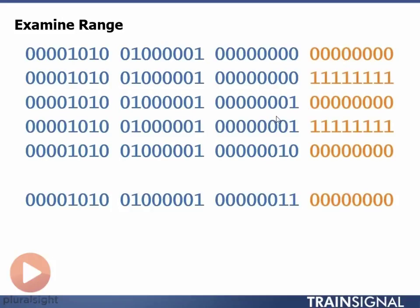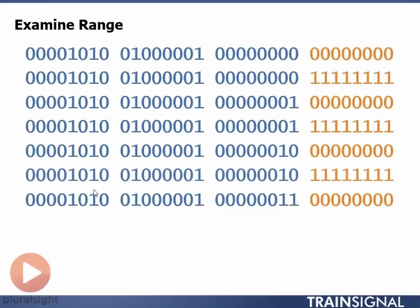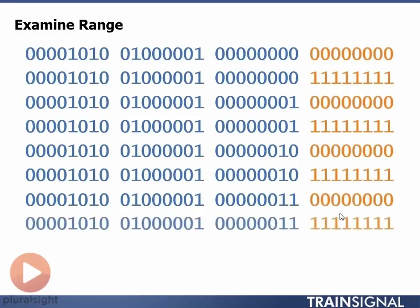Great, add one to that, I get my next available network, which happens to be 10.65.2.0, my broadcast address for that, 10.65.2.255. And then last, my last network, 10.65.3.0 through 10.65.3.255. Making the range of IP addresses that these four networks cover, ranging from 10.65.0.0 through 10.65.3.255.